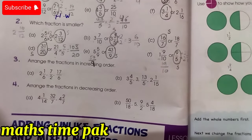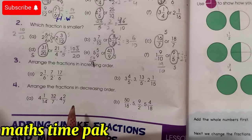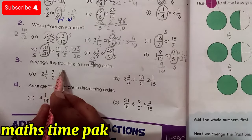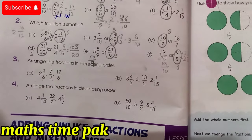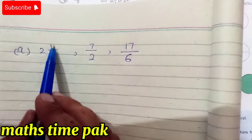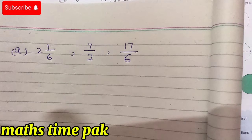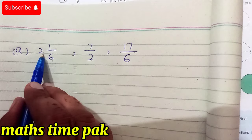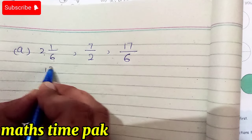Question number 3: arrange the fractions in increasing order. Increasing order means we take the smallest value first and move towards the greatest. Part A has 2 1/6, 7/2, and 17/6. We need to arrange these three fractions in increasing order. First, we convert the mixed number 2 1/6 to a fraction: 6×2=12, plus 1 = 13/6.